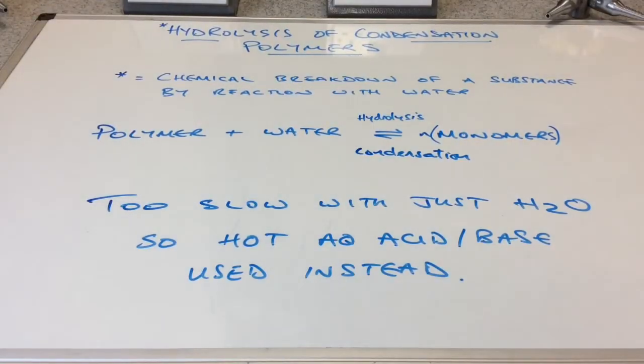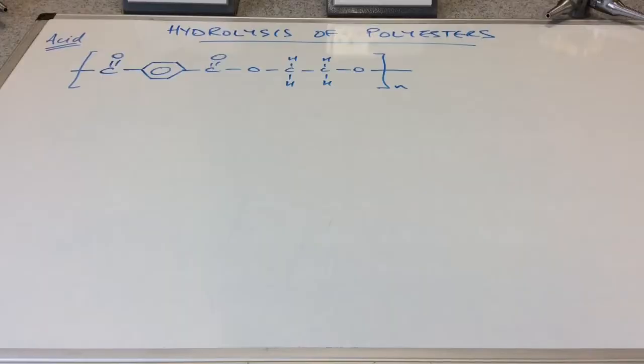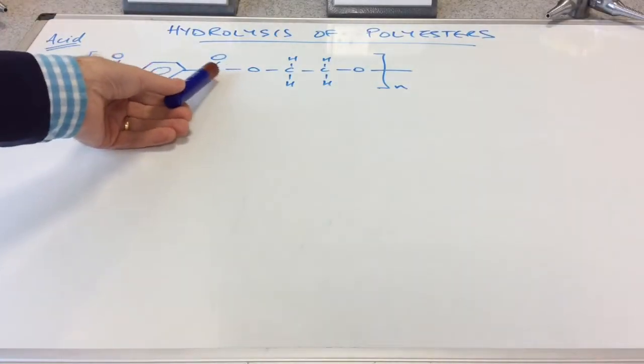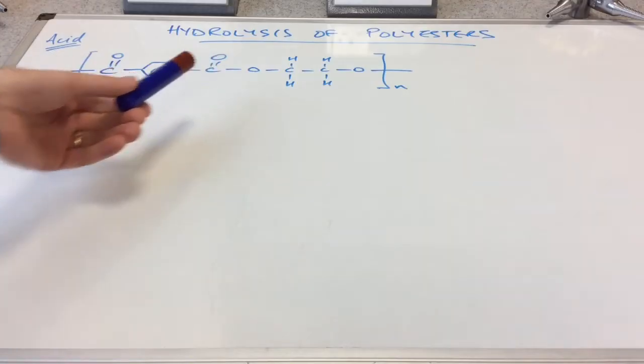What I'm going to do with the rest of the video is focus on the acid and base hydrolysis of polyesters. We'll start with the acid hydrolysis of this polyester. This is actually terylene, and hopefully you can spot the ester link straight away - this C double bond O, single bond O.